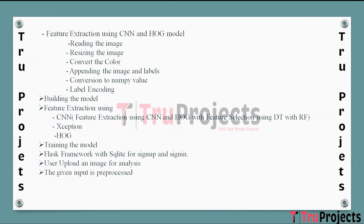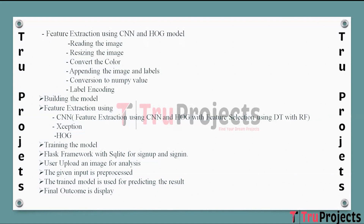The uploaded image is pre-processed using similar steps as during feature extraction, ensuring the input image is in a suitable format for analysis. The trained model is then utilized to predict whether the provided signature is genuine or a forgery. The features extracted using the hybrid approach and selected classifiers contribute to this prediction. The result, indicating whether the provided signature is genuine or a forgery, is displayed to the user, offering insights based on the trained model's analysis.